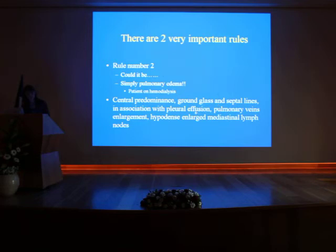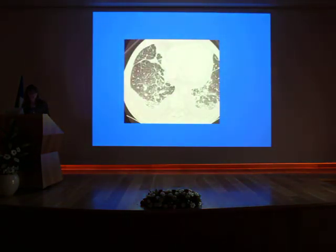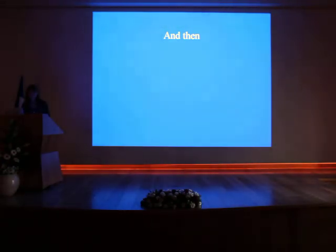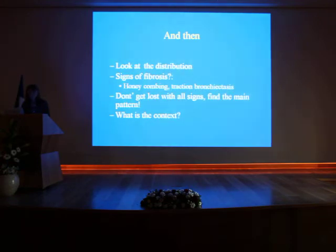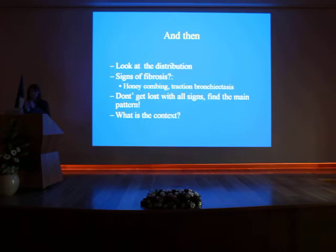This is simply pulmonary congestion. After being sure it's not artifactual gravity-dependent images or cardiac insufficiency, you look at the distribution. Are there signs of fibrosis, such as honeycombing or traction bronchiectasis? If so, it is a fibrosis — you just have to check if it is UIP type or NSIP type. Don't get lost with all the signs; find the main pattern and look at the context.